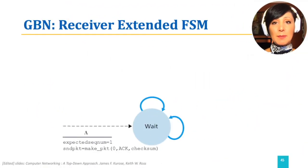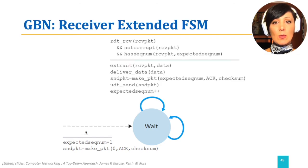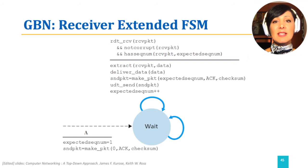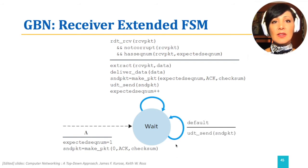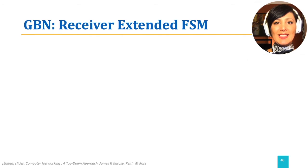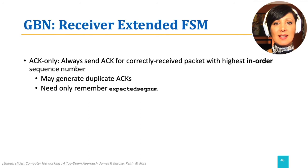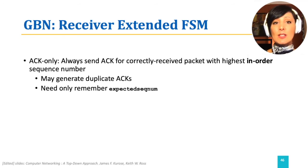On the receiver side, on the event of a correct packet received, if it has the expected sequence number, the data will be extracted and sent to the upper layer. The ACK for the expected sequence number will be sent and the expected sequence number updated. Go-Back-N is an ACK-only mechanism. It may generate duplicate ACKs as it always repeats the ACK for the highest in-order sequence number. This makes the receiver fairly easy as it only needs to remember what sequence number to expect next.